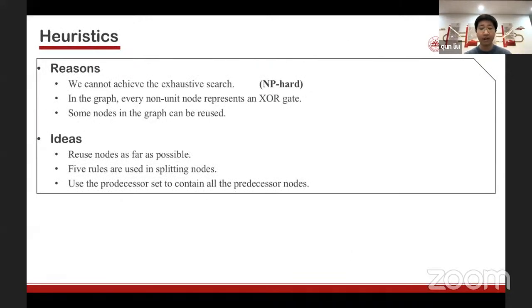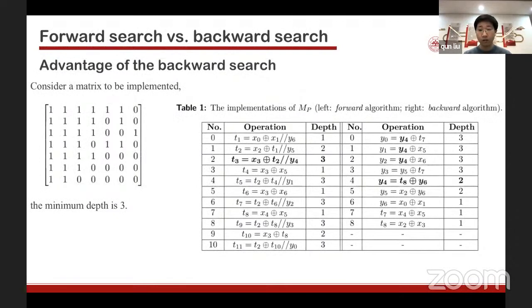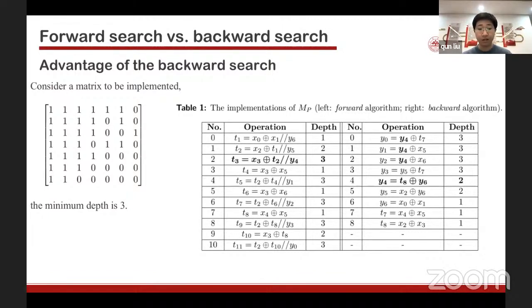Because we cannot achieve an exhaustive search, we use heuristics. The idea is to reuse the predecessor nodes, which reduces the number of XOR operations. For example, consider a matrix to be implemented with minimum depth 3. If we use a naive BP algorithm, we first generate T1, T2, and T3; the depth of Y4 is 3, meaning Y4 cannot be reused. Finally, the circuit needs 11 XOR operations. However, in our backward framework, we obtain a circuit where the depth of Y4 is 2. Then Y4 can be reused to generate Y0, Y1, and Y2 — and we generate the circuit with only 9 XOR operations.